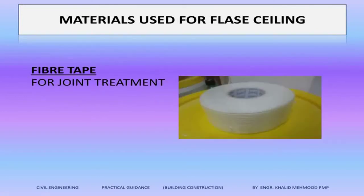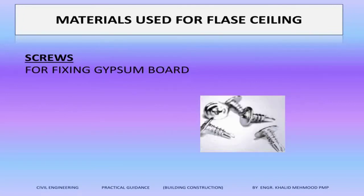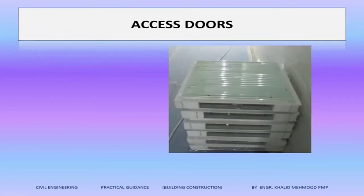This is a fiber tape — this tape is used as a joint treatment between the different gypsum board panels. These are the black color screws we are using for the GI suspension when we are fixing with the concrete, block work, or plaster. And these are the screws which are connecting the GI suspension system.